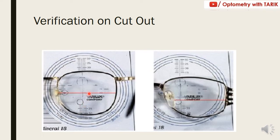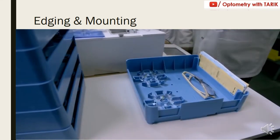To verify that the measurements are correct, place the frame over the lens layout: the pupillary center should coincide with the fixation cross on the lens, and all areas — the distance optical circle and the near optical circle — should be within the frame boundary. If the near reading area is too low or getting cut out, it indicates improper marking or incorrect frame selection. This verification ensures proper alignment and that the near reading area is well within the frame.